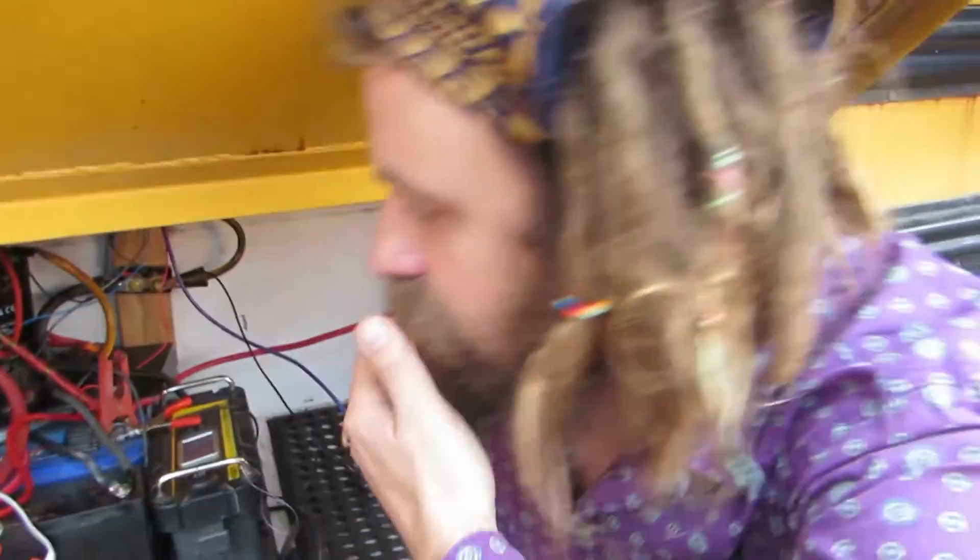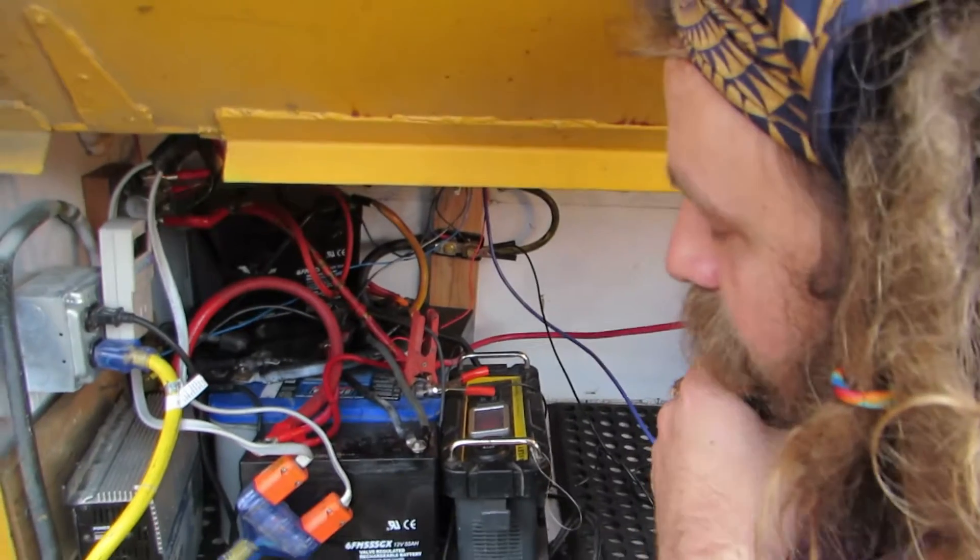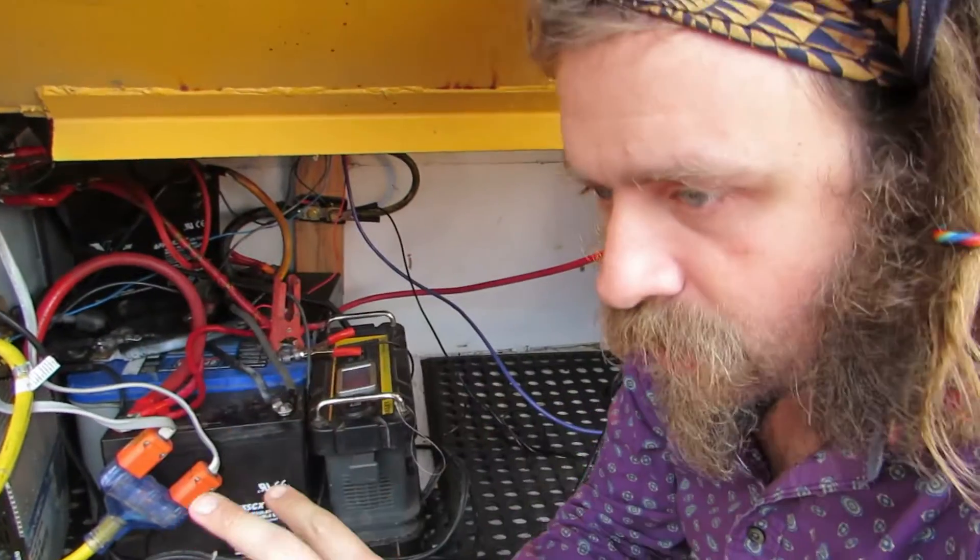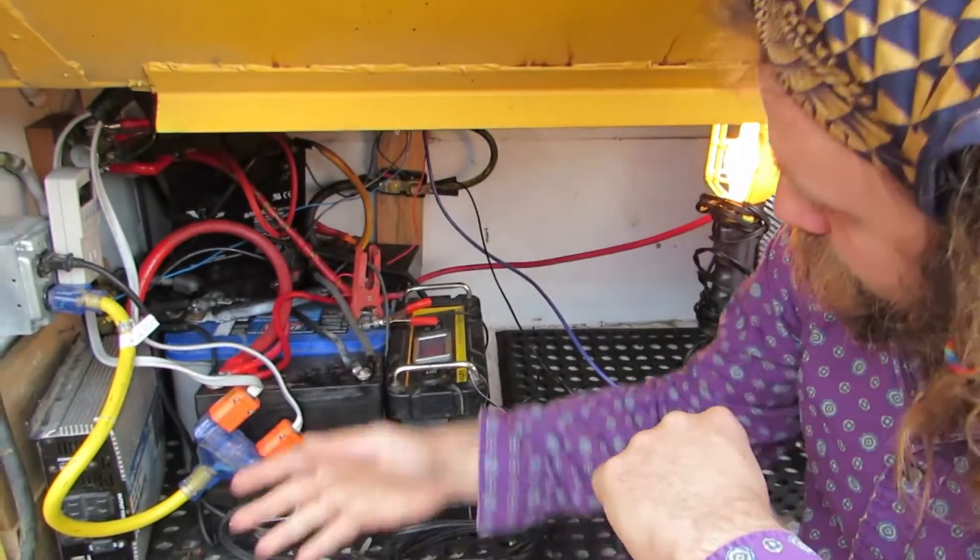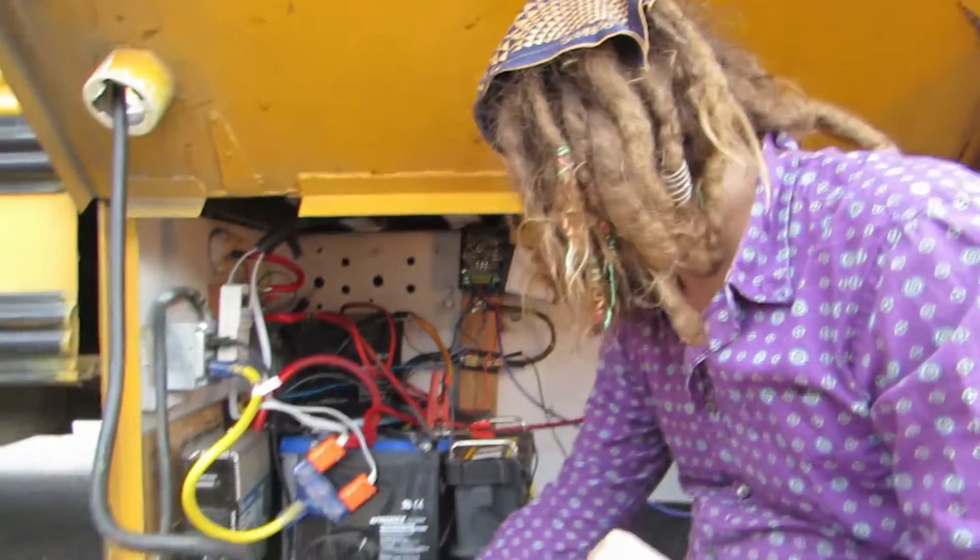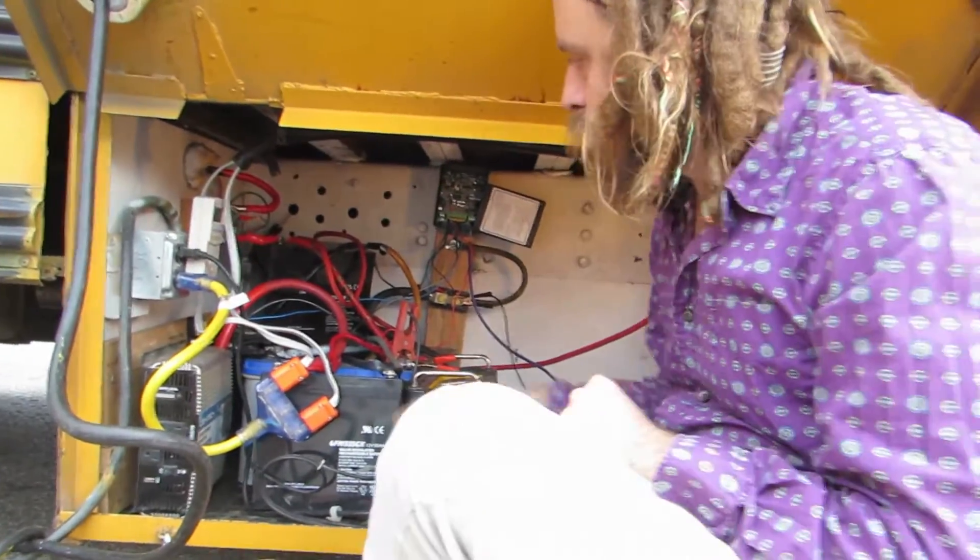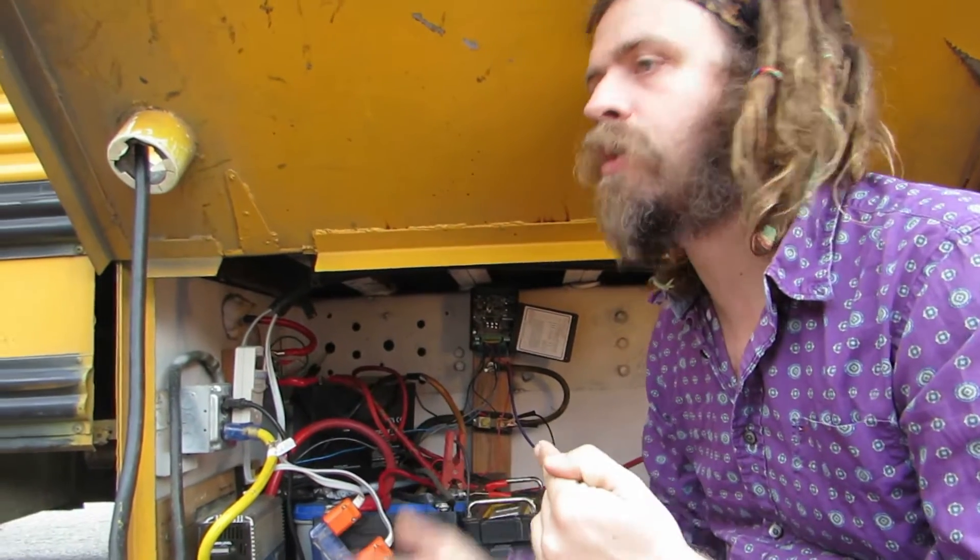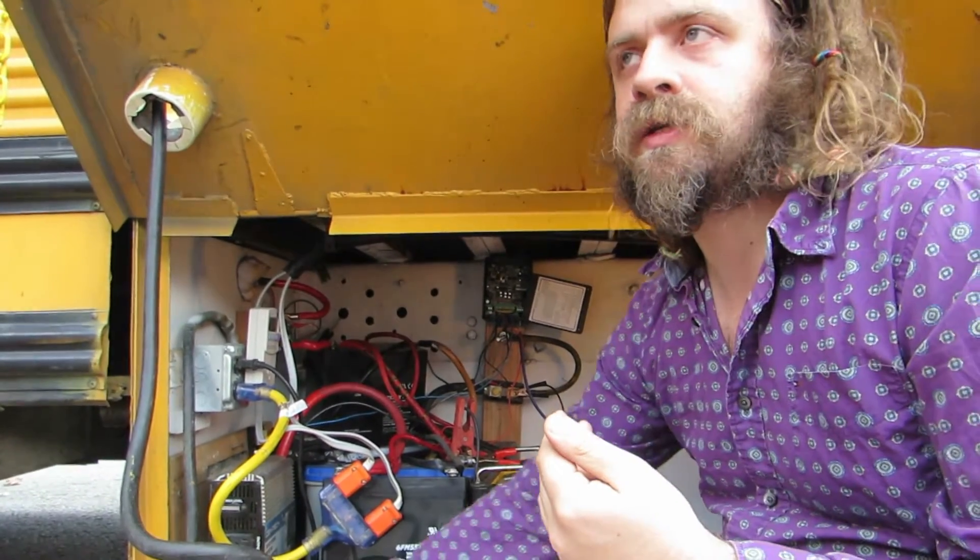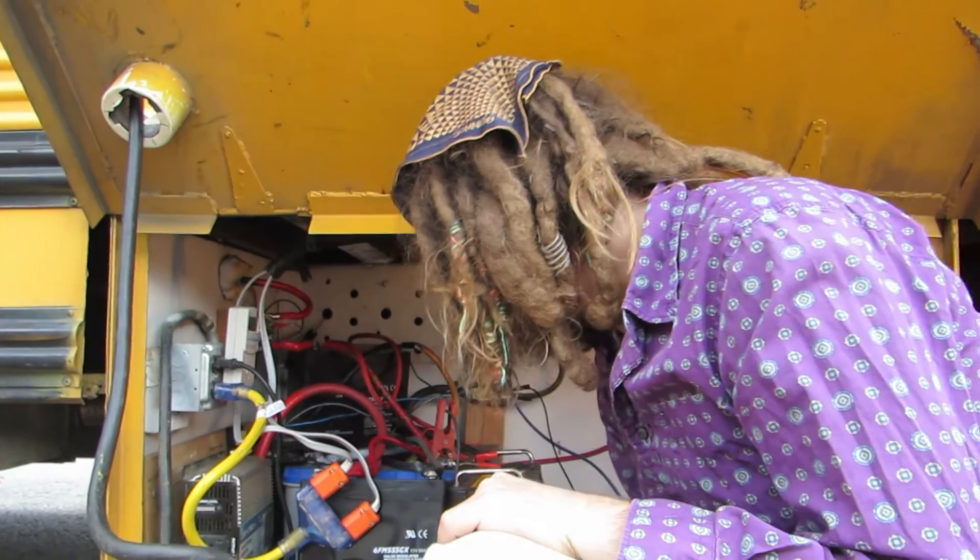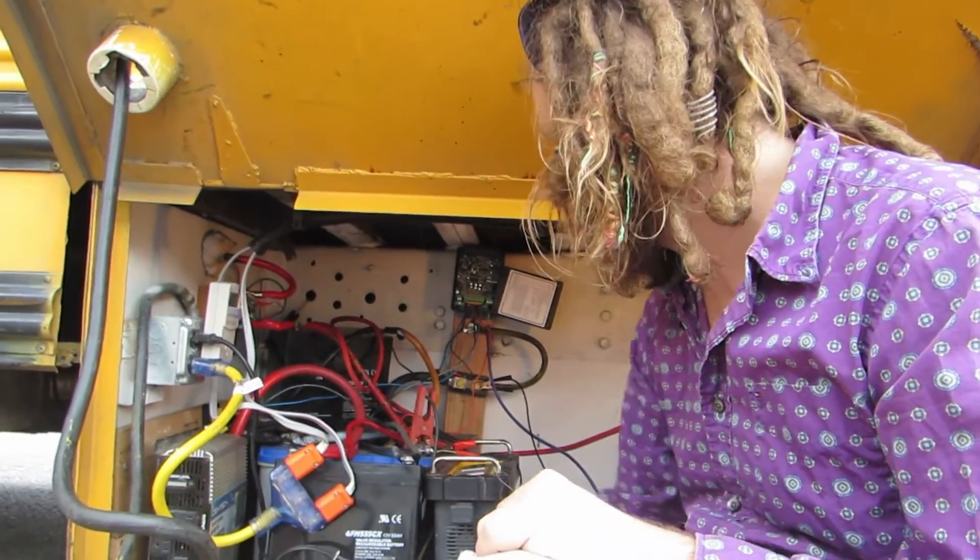In the future, one of the next steps that we intend to take is to add solar panels to the top of the bus, and then we'll have another shunt where we measure the incoming power from the charge controller. Currently, we use this Bogart pentametric system. Ideally, I think at some point what we'll do is directly measure the voltage going across the shunts into a microcomputer, and that way we can run our own real-time metrics on the current on the shunts. So those are some next steps that we'll be taking in the battery box.